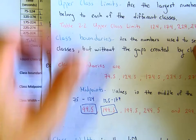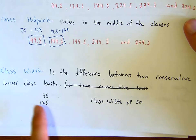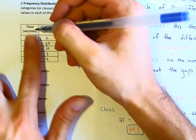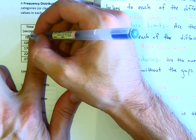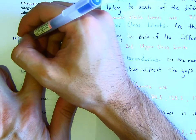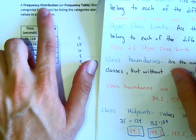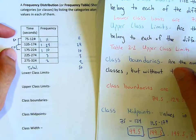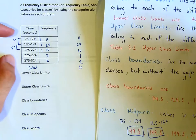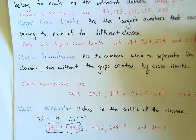The class width is simply the difference between two consecutive lower class limits or upper class limits. What's the difference between 75 and 125? It's 50. The difference between 125 and 175 is also 50. Within a frequency distribution, you always have the same class width, so your data is nice and organized.